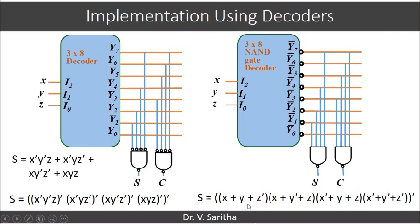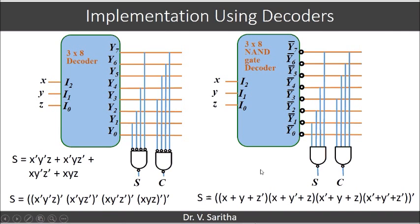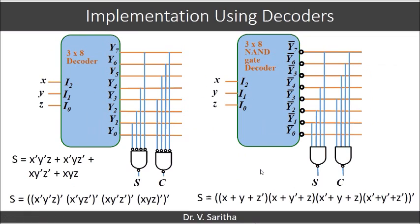What happens here is nothing but we are using max terms and finally it is complemented to get the actual output. This is nothing but what we say as implementation of the boolean function using decoders.